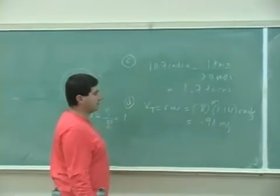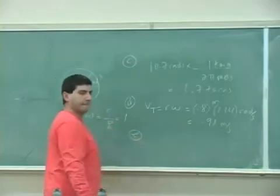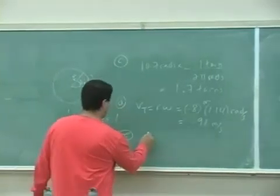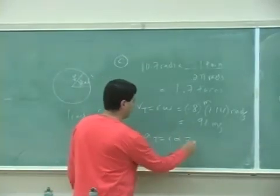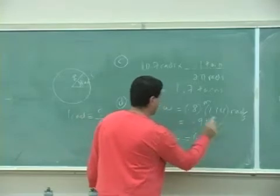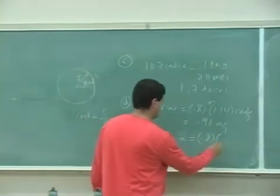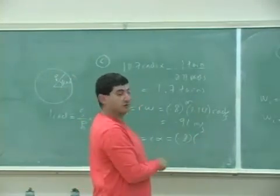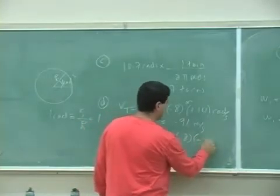So now how about the tangential acceleration? Okay, so a tangential is r alpha. So 0.8 times alpha which is what? Did we get alpha already? Oh the alpha was already given at the beginning. So we have negative 0.4.